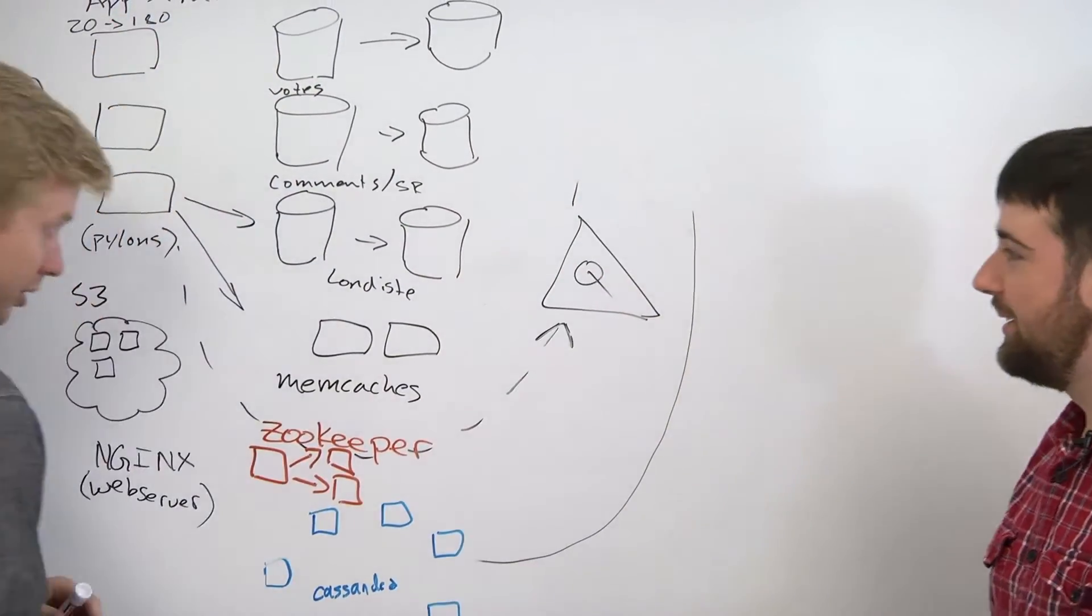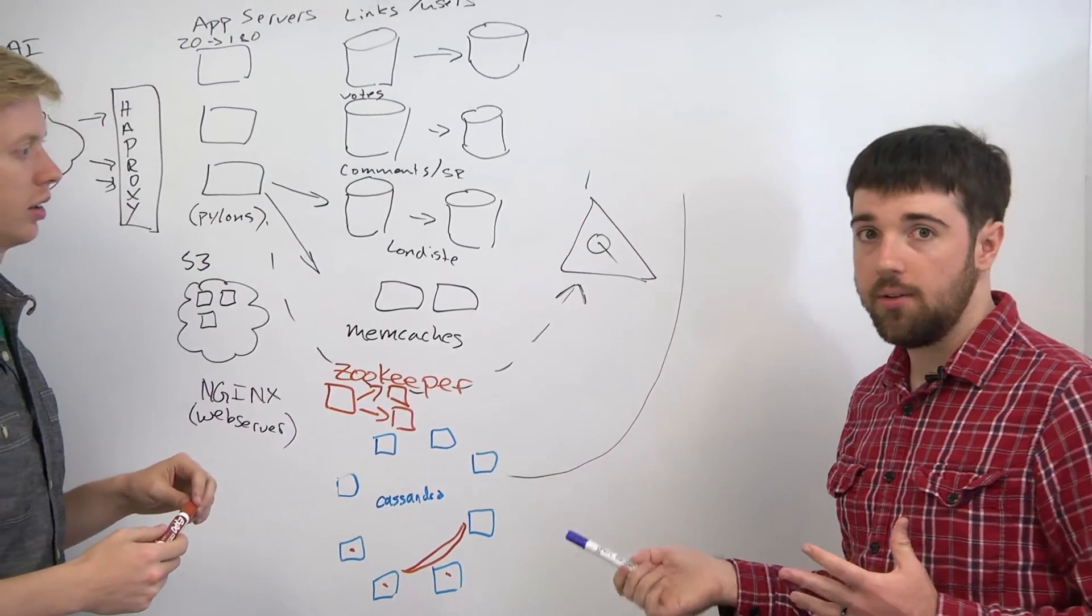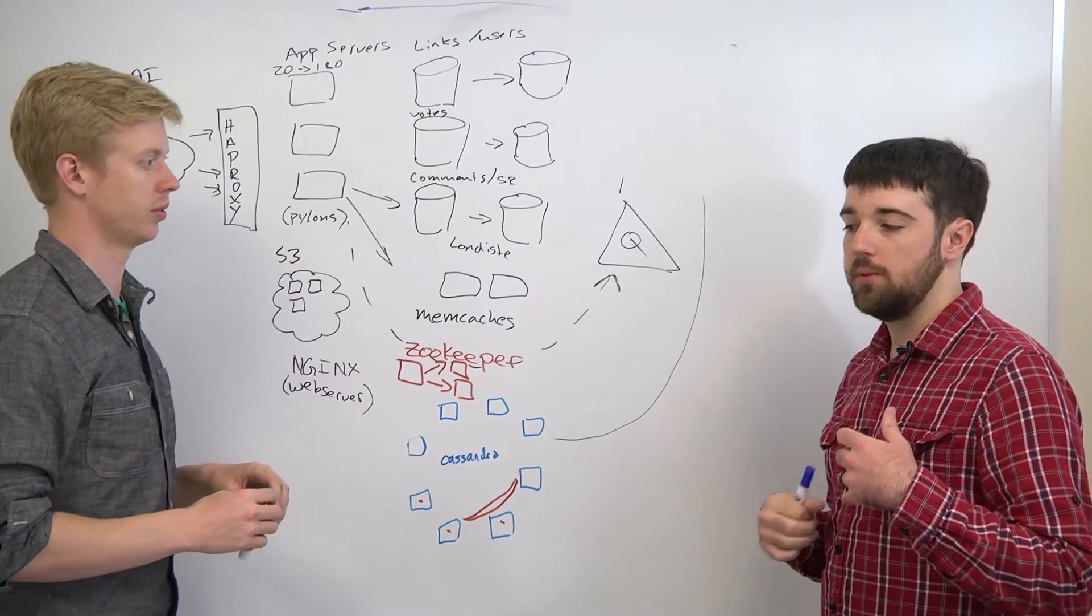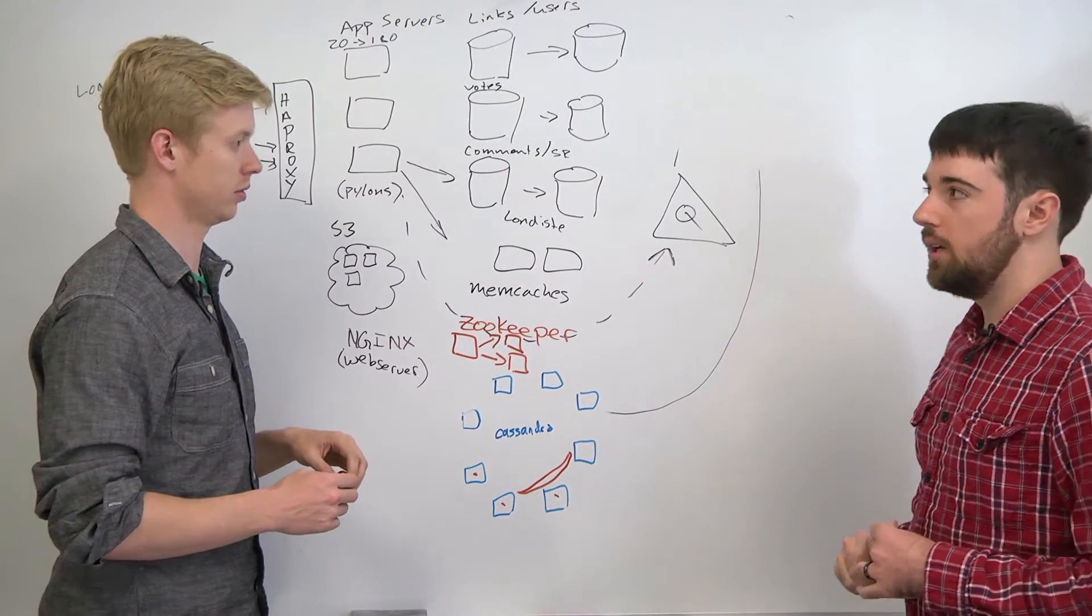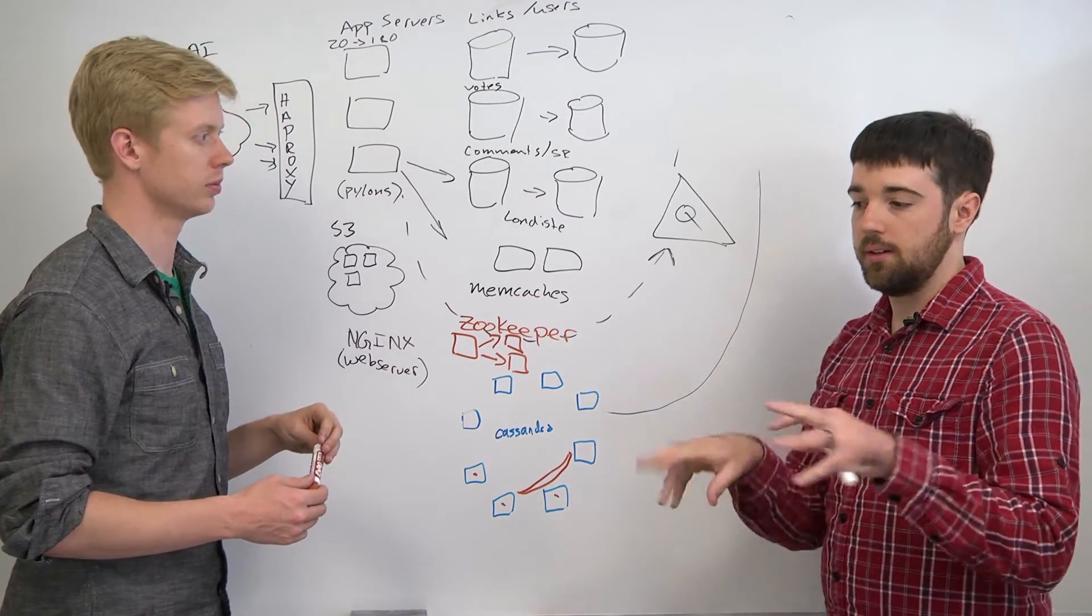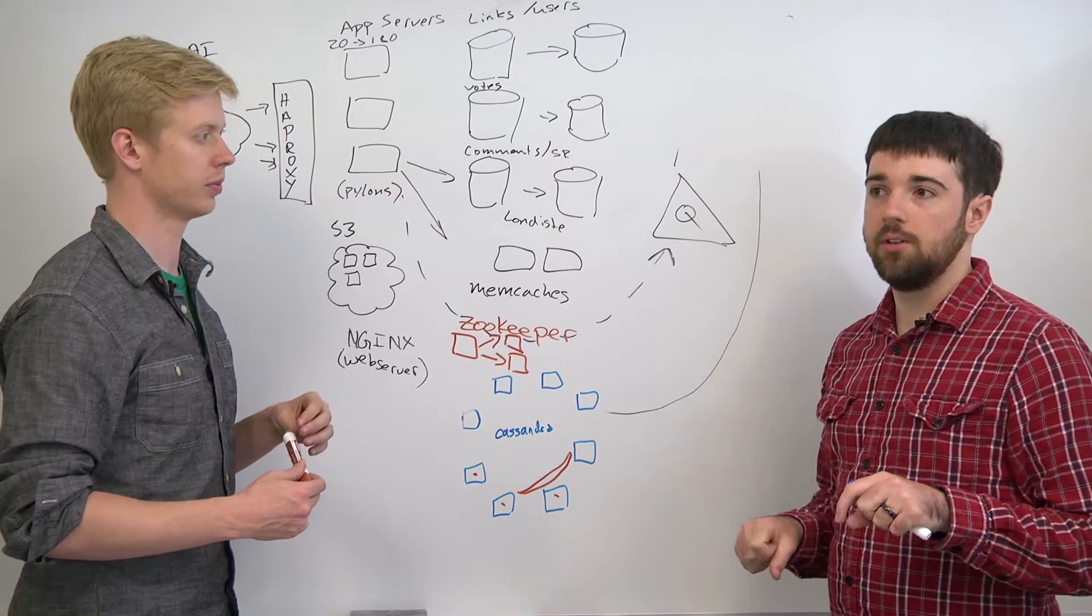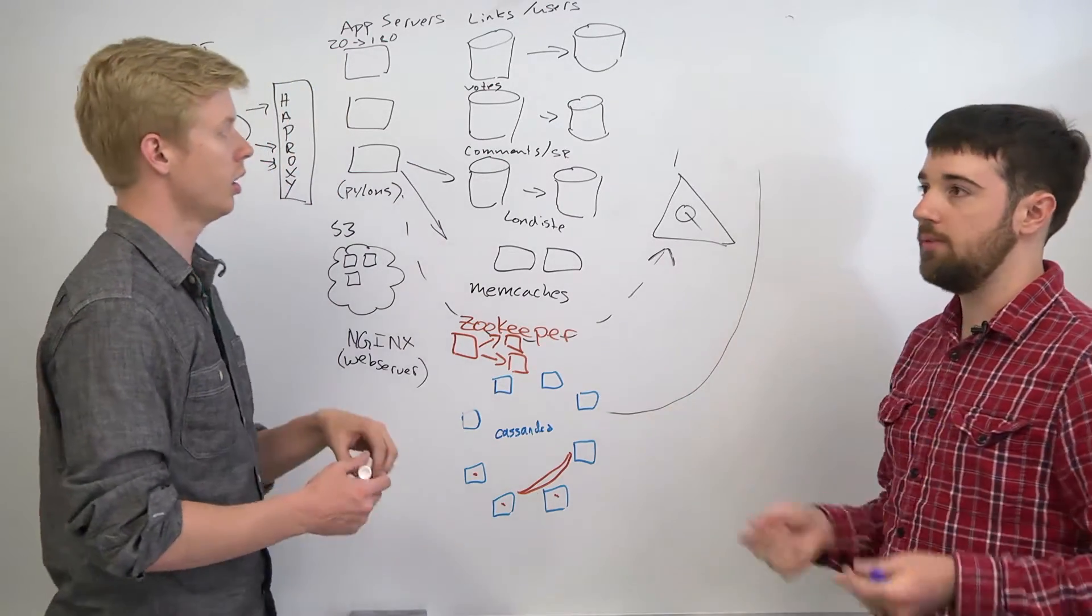We do still use queuing, but not for this stuff. The top links of this hour, that kind of stuff, is recomputed en masse for the entire site using MapReduce. It'll dump every link submitted in the last hour, group them up, figure out where they should go, and then completely overwrite those listings every 10 to 15 minutes.